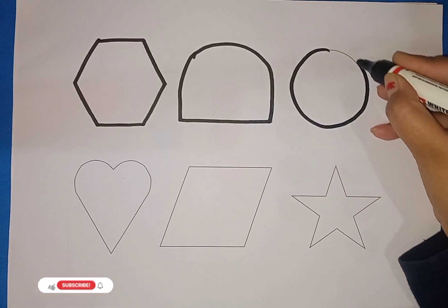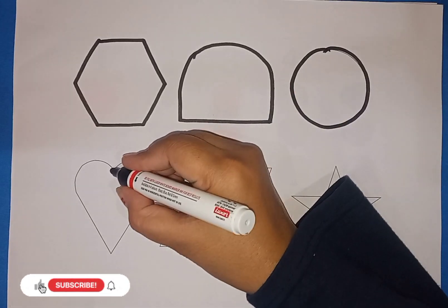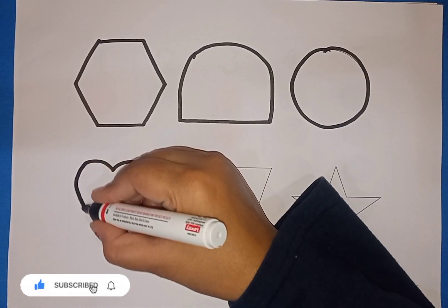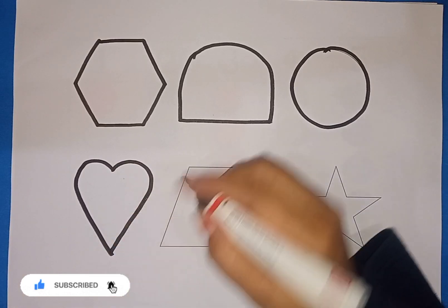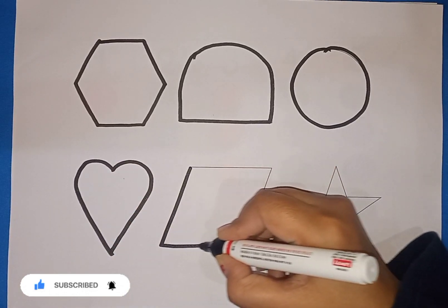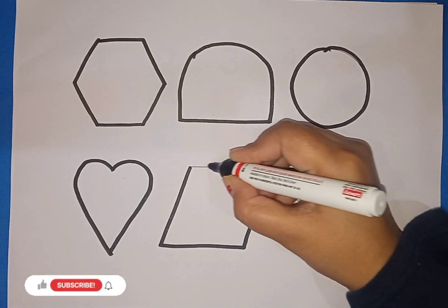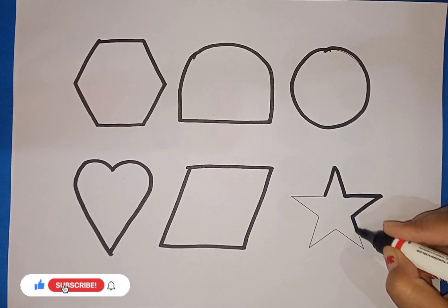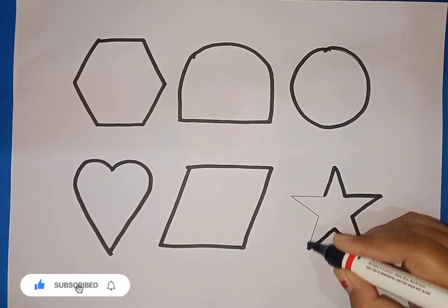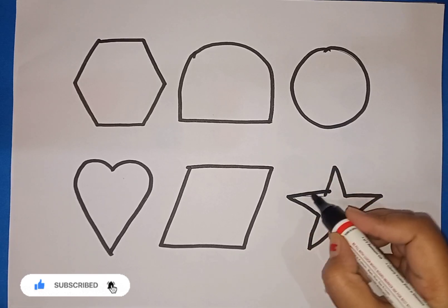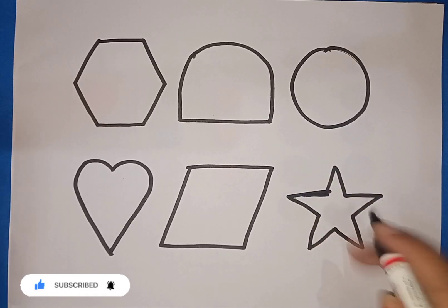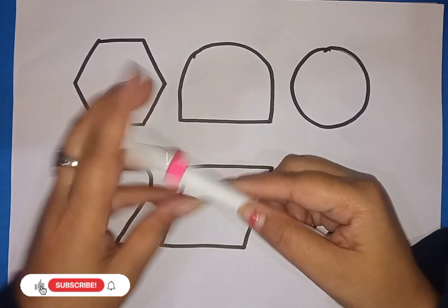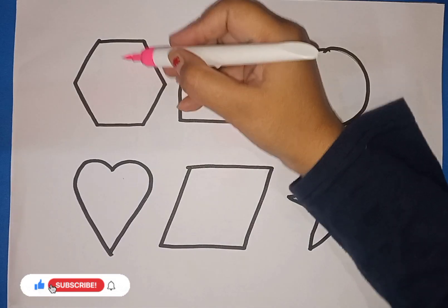Twinkle twinkle little star. How I wonder what you are. When the blazing sun is gone, when the nothing shines at home. When you show your pink color. Little white. Hexagon.